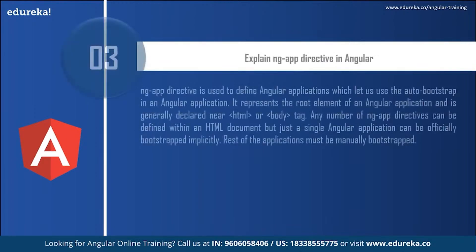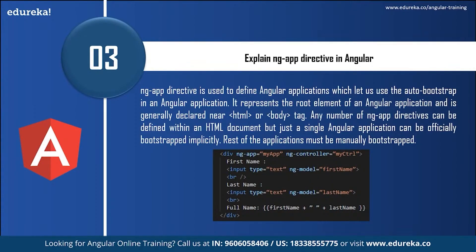Explain the ng-app directive in Angular. The ng-app directive is used to define an Angular application and allows auto-bootstrapping. It represents the root element of an Angular application and is generally declared near the HTML or body tag. Any number of ng-app directives can be defined within an HTML document, but only a single Angular application can be officially bootstrapped implicitly — the rest must be manually bootstrapped.